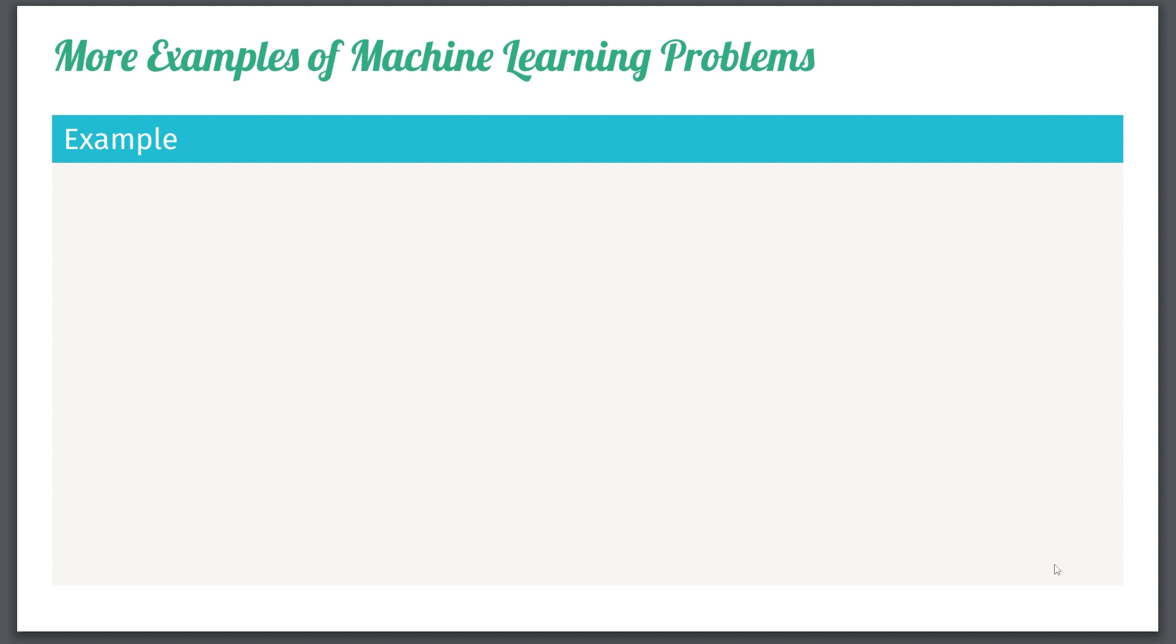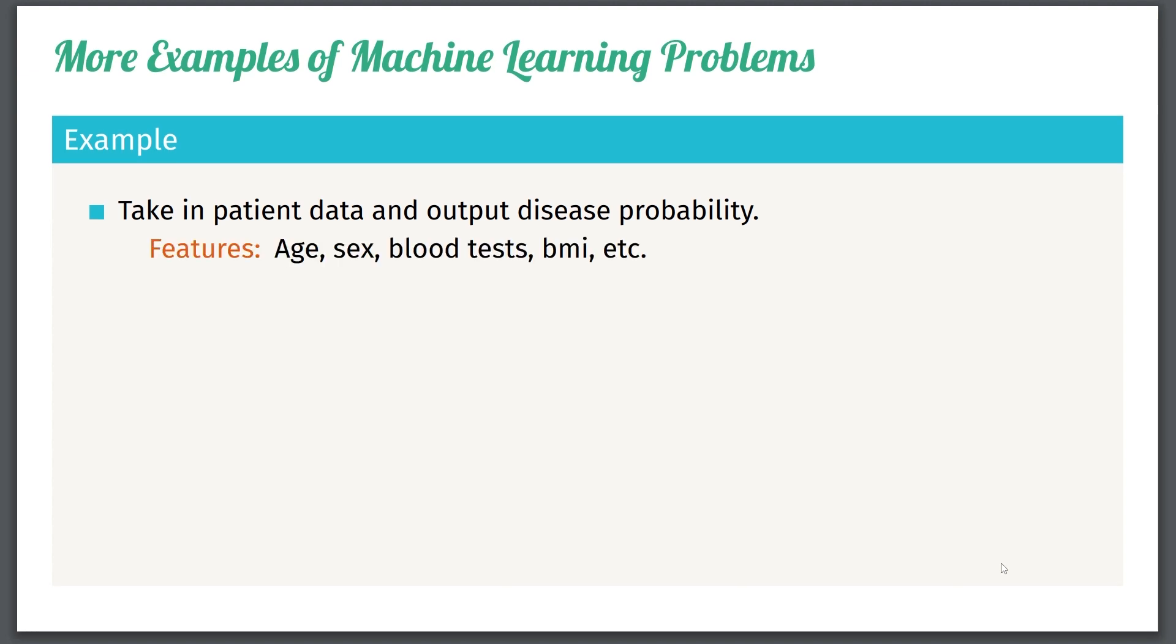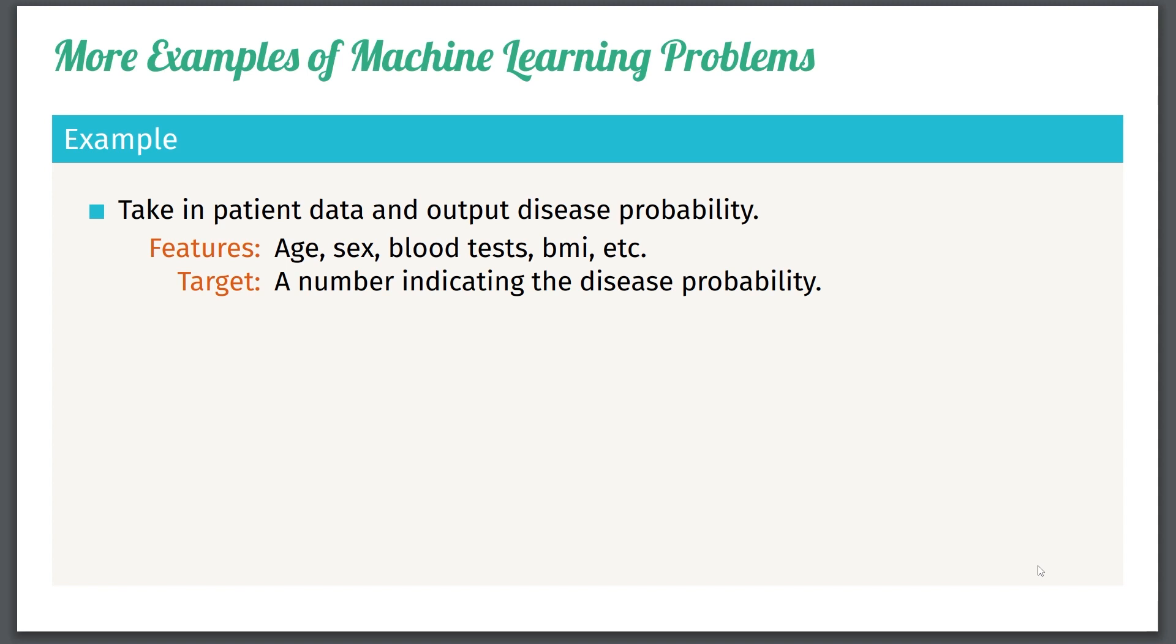So let's just give you a few more examples to warm you up to this idea of machine learning problems. So one problem is to essentially take in patient data and output the disease probability. So it might be a really serious disease and you want to know how far the disease has progressed. We can perhaps estimate this by first collecting different information and then predicting the disease probability with a machine learning model. So in this case, the features are maybe age or sex or blood tests and BMI, and the target, the thing we want to predict, is a number indicating the disease probability. And for this example, you can see that some of the features are rather easy to get from a patient, like your age, sex, and maybe a simple blood test or BMI, but actually the disease probability can be very hard to determine. And that's where the machine learning model comes in.